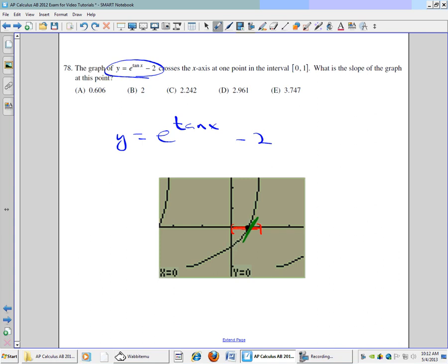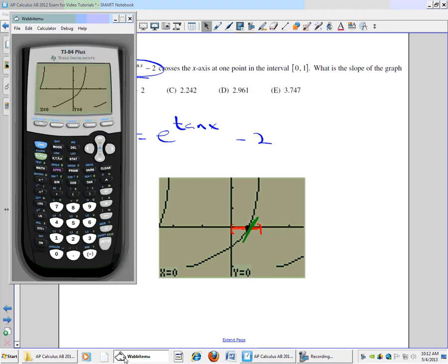So let's go to the calculator again. We're going to find, we'll go to second and calculate. We're going to find the zero. That's first of all where it's crossing the axis. So go to number 2.